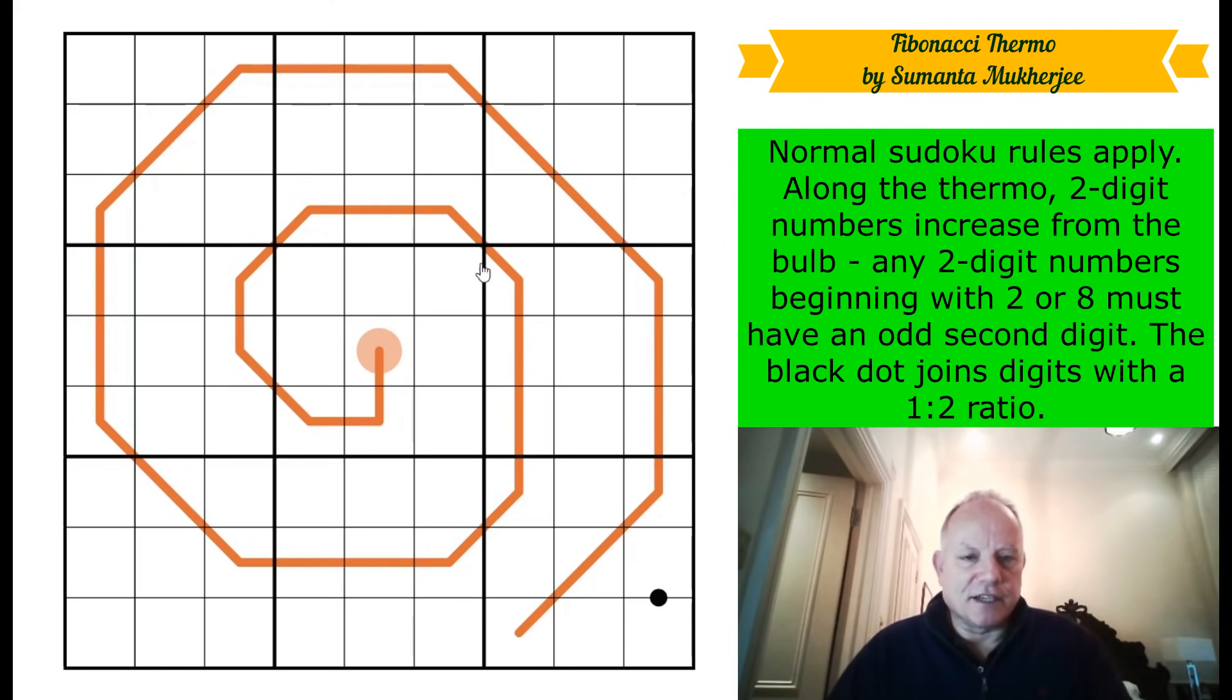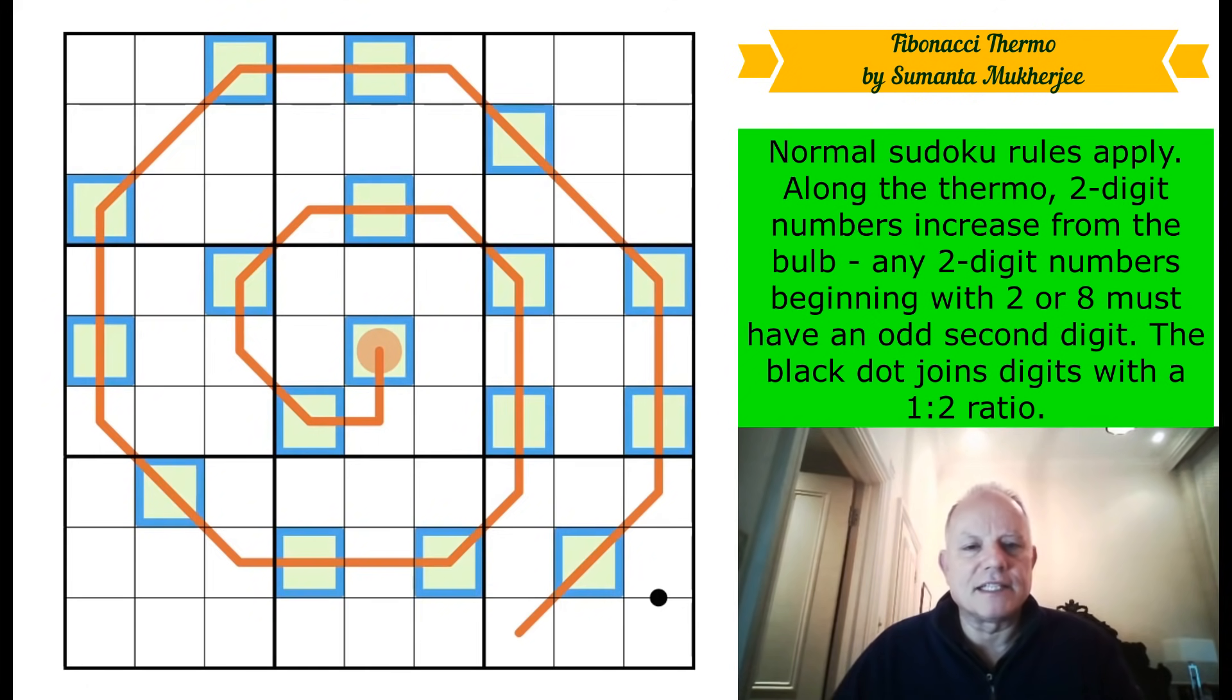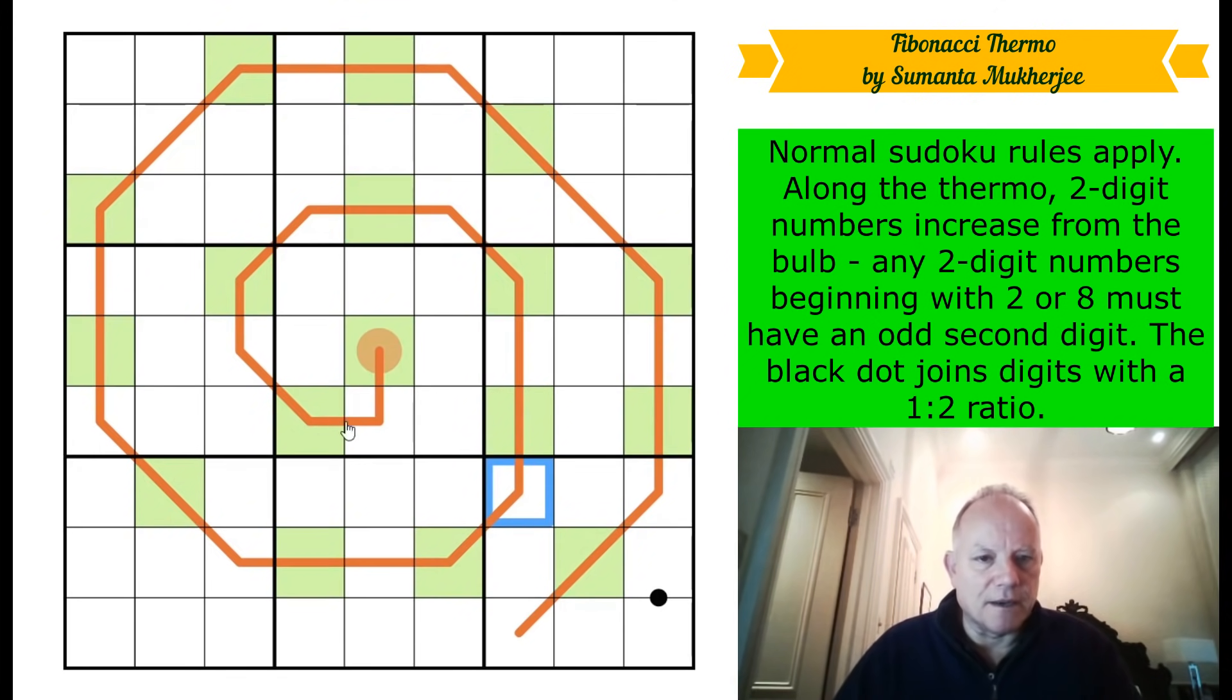I mean, we've got nothing to go on except, obviously, the thermo. So let's start by highlighting the tens digits, just so that we know where they are. They're alternating all around. That helps us check we've got an even number of cells. What colour is a tens digit? It's green this time.